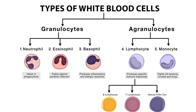Thirdly, white blood cell disorders can be classified as benign or malignant. The majority are benign. Generally, too much of one type of white blood cell is suffixed with "-philia," and too few is suffixed with "-penia." For instance, leukocytosis is a white blood cell count above the normal range, and leukopenia is a white blood cell count below the normal range.